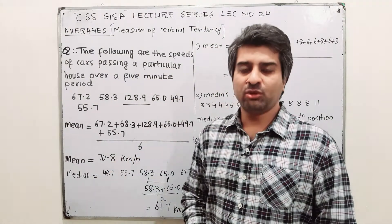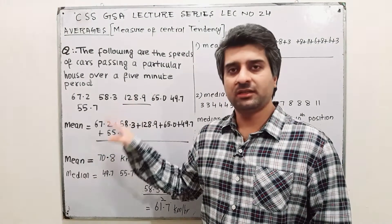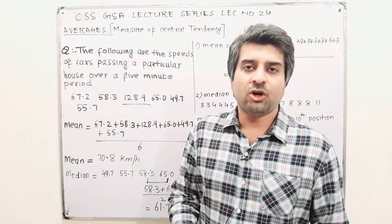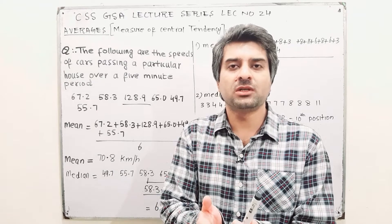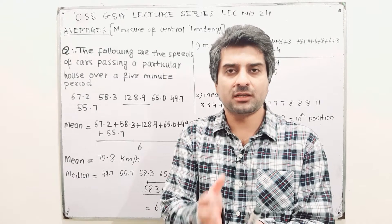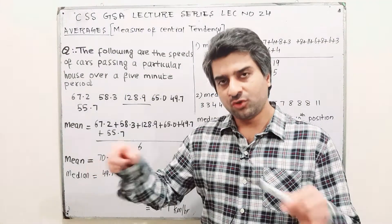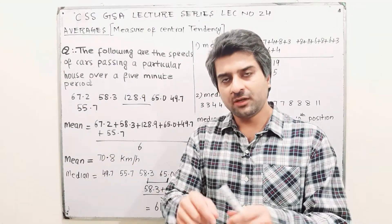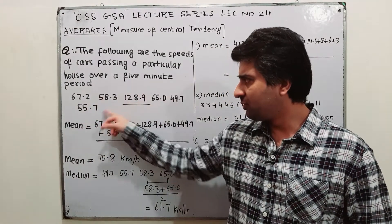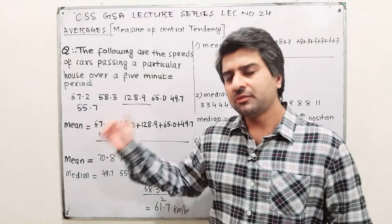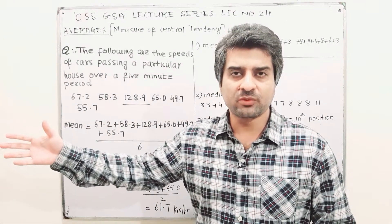If you calculate mean by summing all values divided by 6, your answer is 70.8 km/h. However, 70.8 does not represent this data well. An average should be a value that the data spreads around, but 128.9 is quite large compared to the rest. When you have extreme values, mean may not be the most suitable measure.